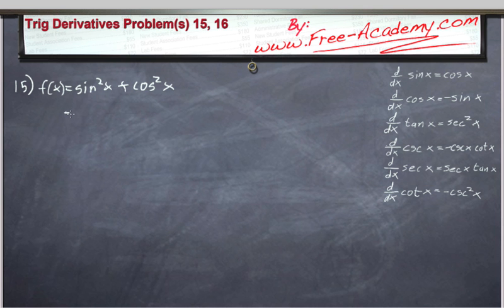Well what we need to do is rewrite it as sine of x times sine of x and cosine of x times cosine of x, because that's what squared is - it's something multiplied by itself once. So sine of x times sine of x plus cosine of x times cosine of x, and what's the next step?